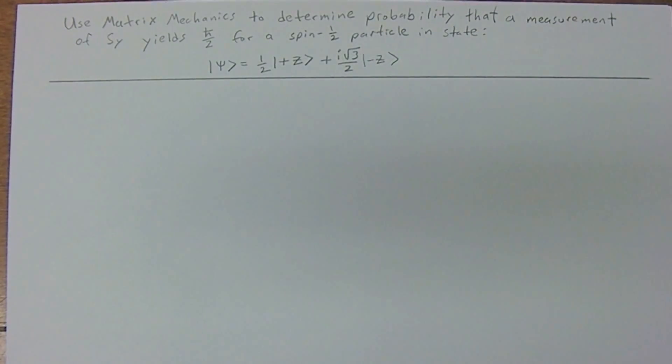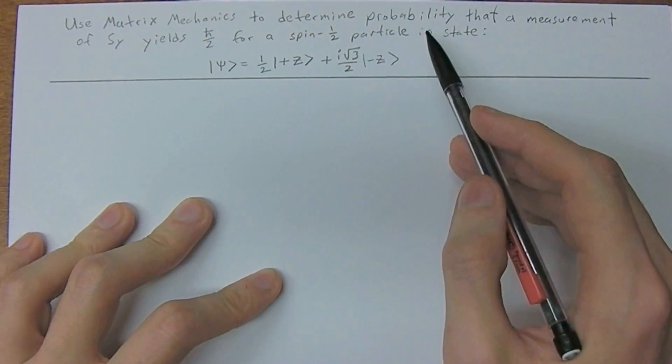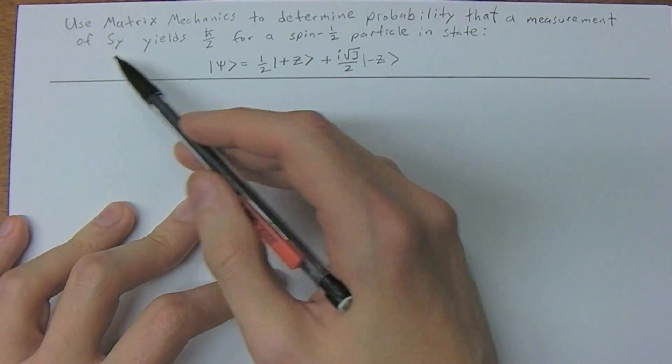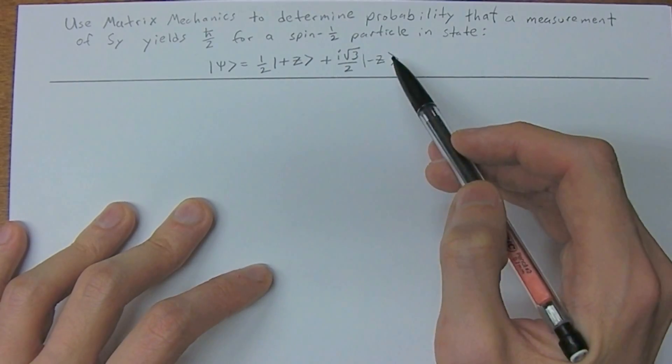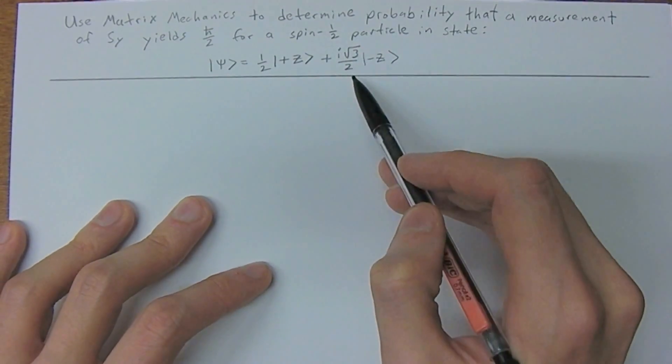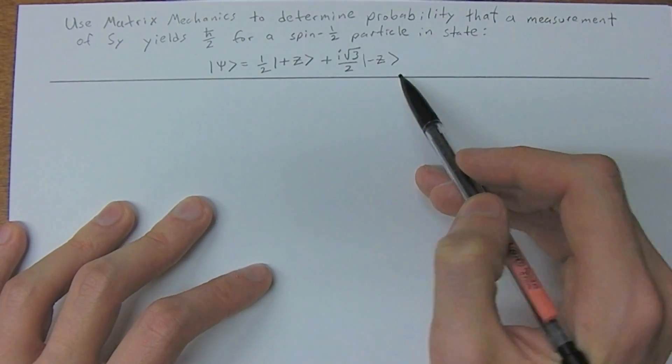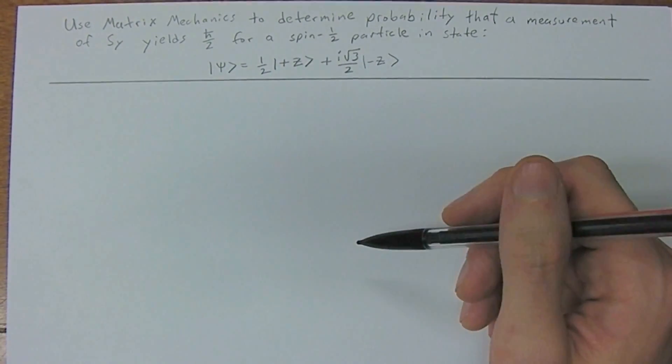So this is an introduction to matrix mechanics. We're going to use matrix mechanics to determine the probability that a measurement of s_y yields h-bar over 2 for a spin 1/2 particle in the state ket psi equals 1/2 ket plus z plus i square root 3 over 2 ket minus z. So this is the same as the previous example, except we're going to use matrices now.